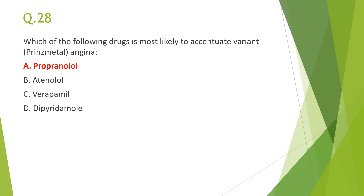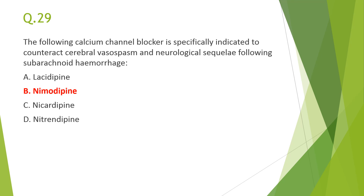Next: the calcium channel blocker specifically indicated to counteract cerebral vasospasm and neurological sequelae following subarachnoid hemorrhage is nimodipine. This calcium channel blocker is preferred in neurological stroke or hemiplegia where cerebral vasospasm has occurred.